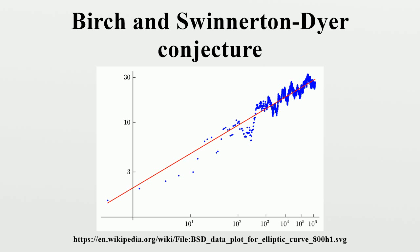The conjecture relates arithmetic data associated to an elliptic curve E over a number field K to the behavior of the Hasse-Weil L-function L of E at s equals 1. More specifically, it is conjectured that the rank of the abelian group E of points of E is the order of the zero of L at s equals 1, and the first non-zero coefficient in the Taylor expansion of L at s equals 1 is given by more refined arithmetic data attached to E over K.